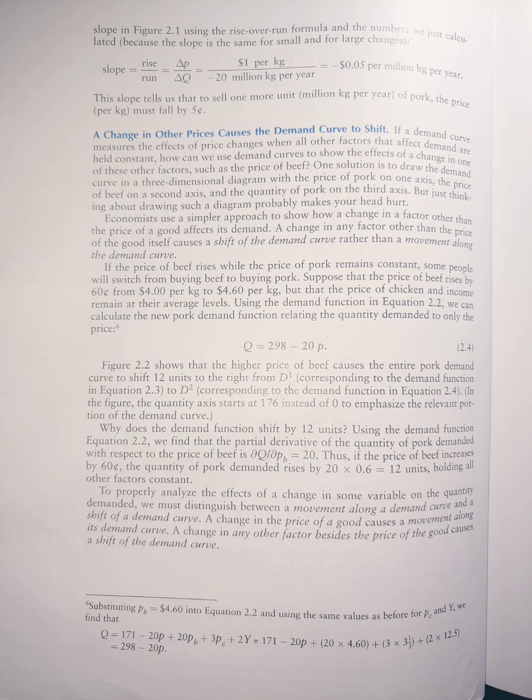The demand curve for processed pork shifts to the right from capital D superscript 1 to capital D superscript 2 as the price of beef rises from $4 to $4.60. As a result of the increase in beef prices, more pork is demanded at any given price.